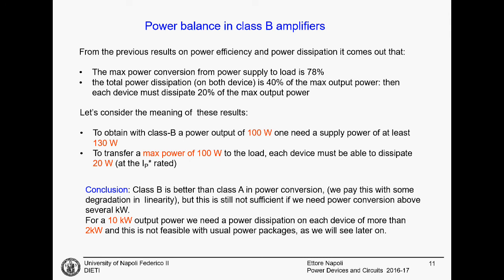In order to conclude this discussion, Class B amplifier is much better than Class A. We pay this with linearity on the output, but still this is not enough. Imagine that if we want to transfer 10 kilowatts on the output, with this kind of efficiency we need to dissipate more than 2 kilowatts on the devices. And there are possibly no packages able to dissipate this amount of power. Possibly, most probably you need to put this in water or in liquid nitrogen in order to dissipate this amount of power. And this is not feasible from the cost point of view.